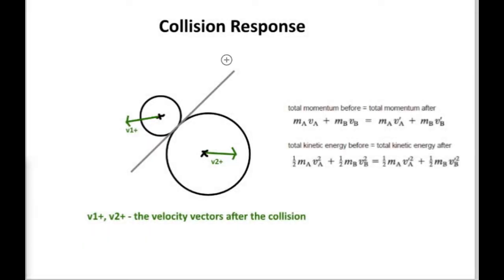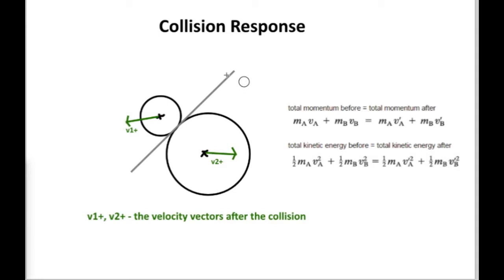To simulate the collision between two objects, I will have two physical laws as the basis of the algorithm: the conservation of momentum and the conservation of kinetic energy. If the sum of the kinetic energy of the two objects remains the same after the collision, then the collision is an elastic one. I will start to implement that first, and later move on to inelastic collisions.